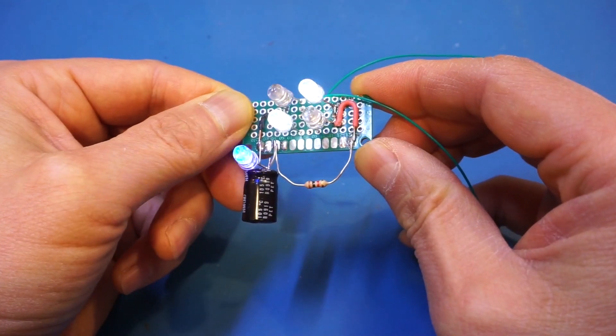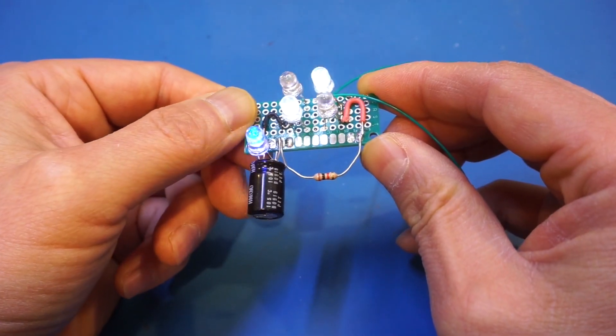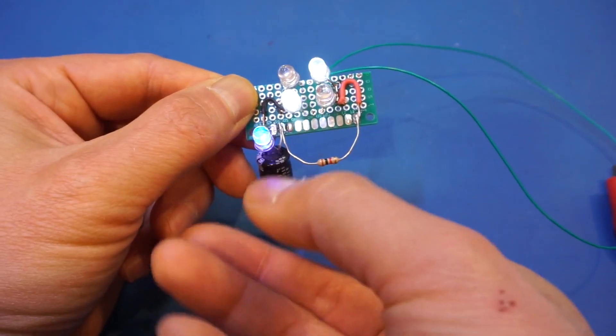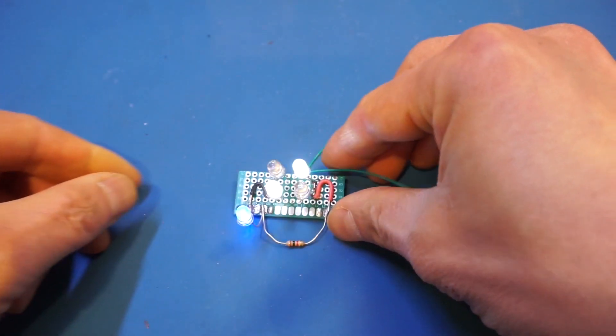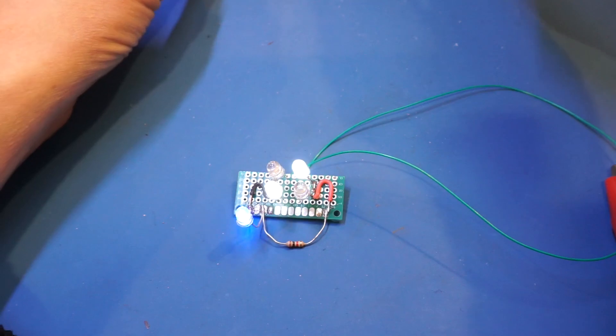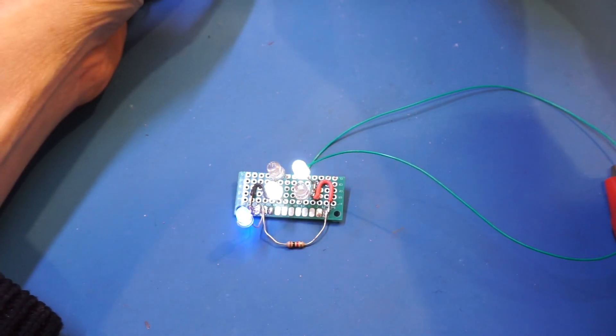Of course, bridge rectifiers are not just limited to sinusoidal waveforms. So now let's take a look at how it rectifies a square wave. For that, I'm going to change the input waveform, change it to square wave.